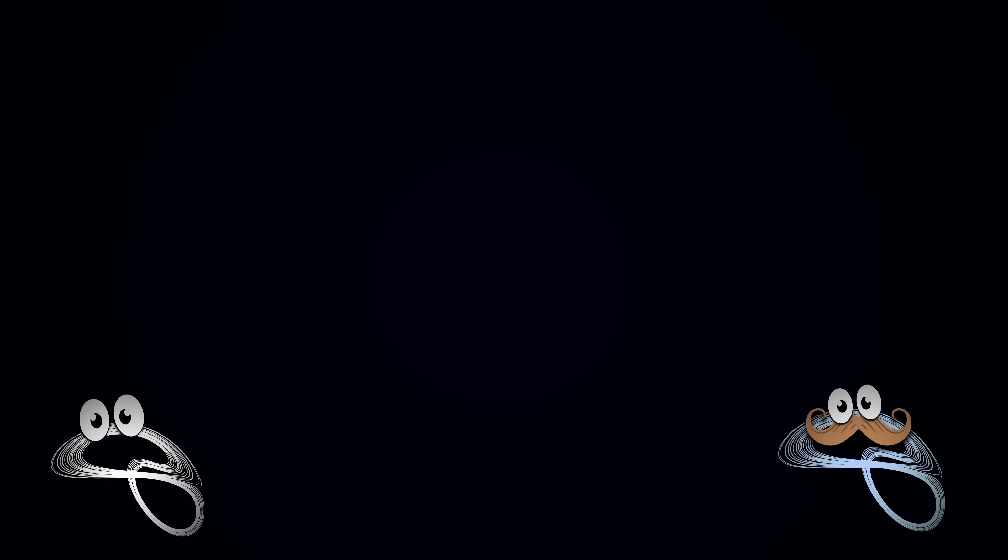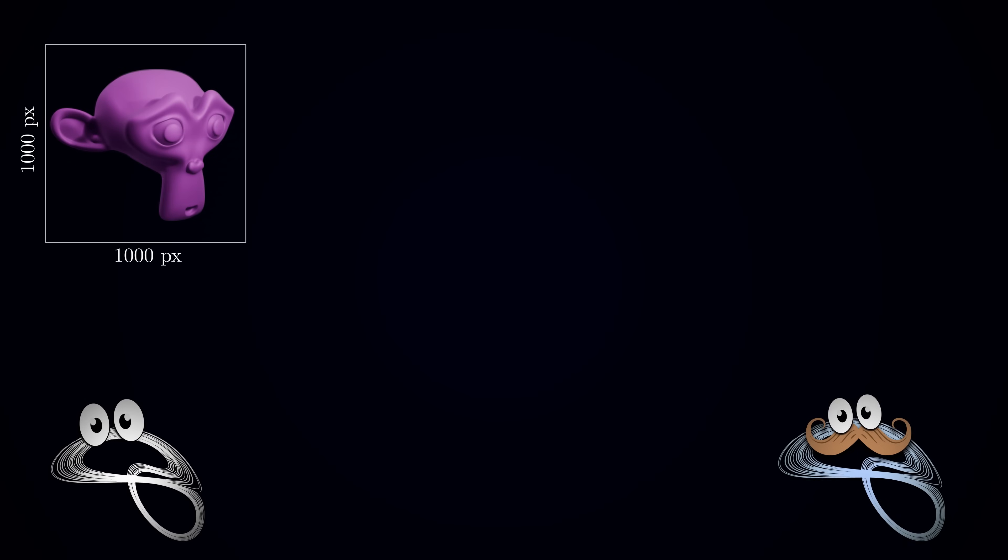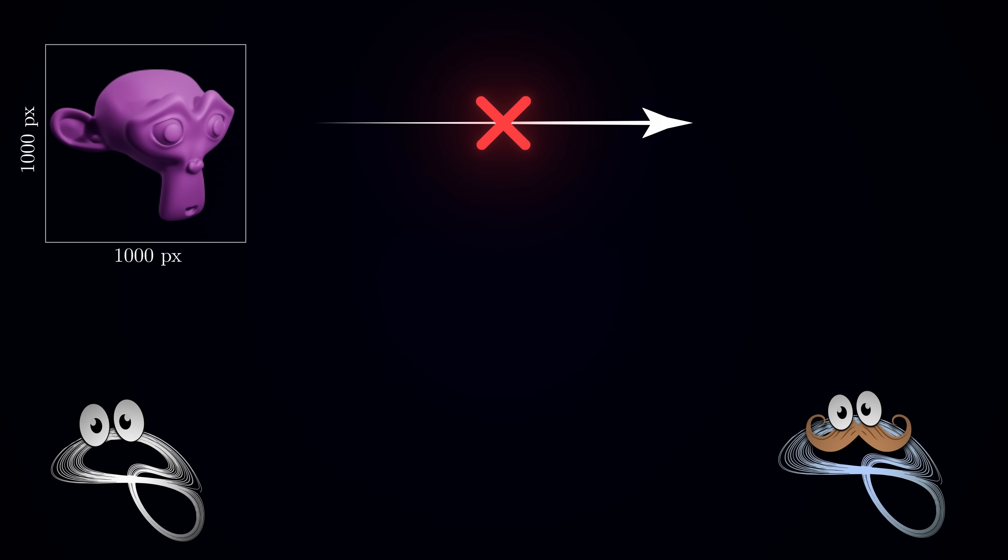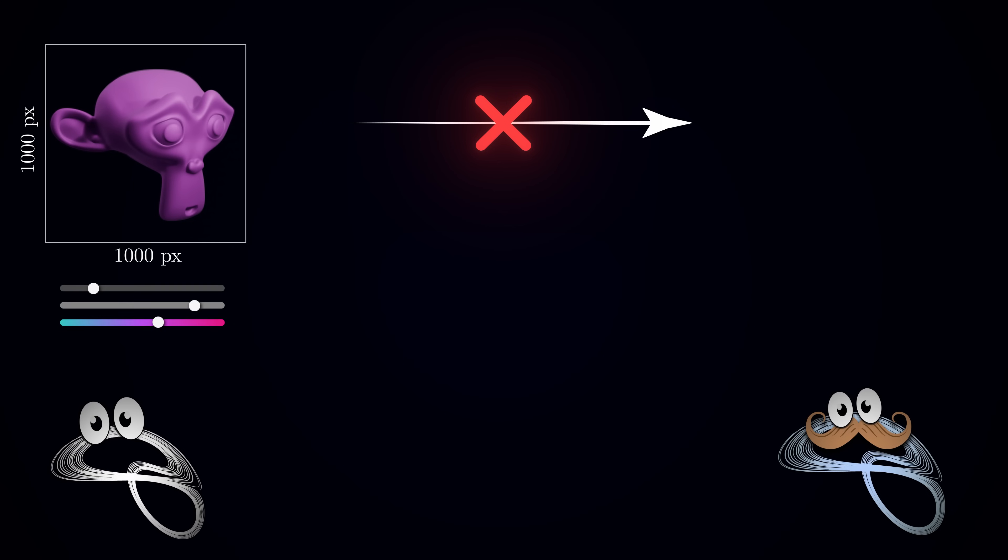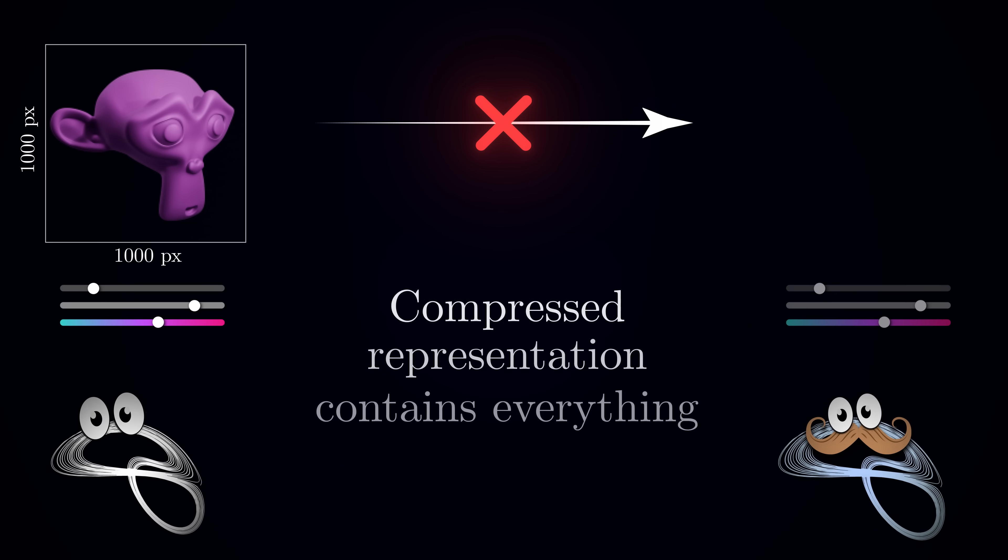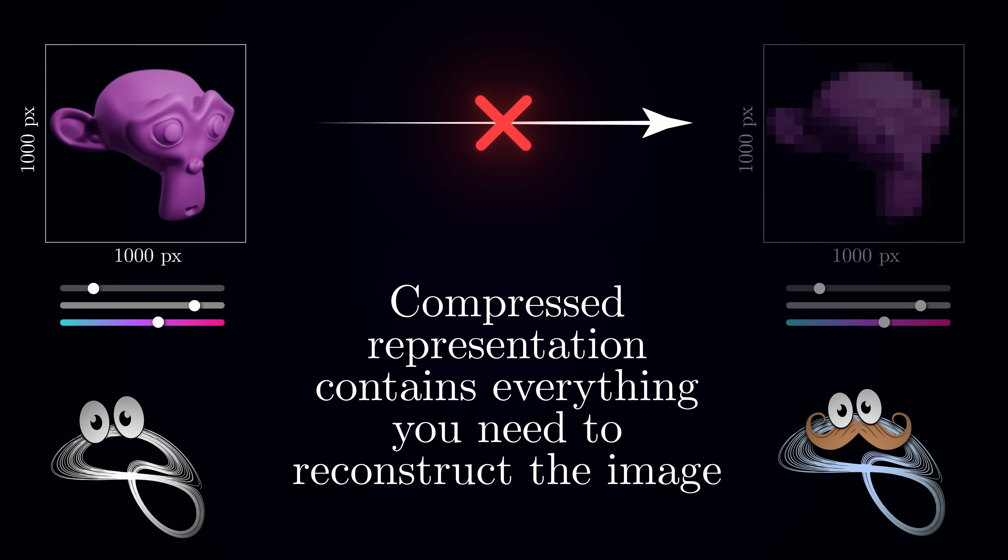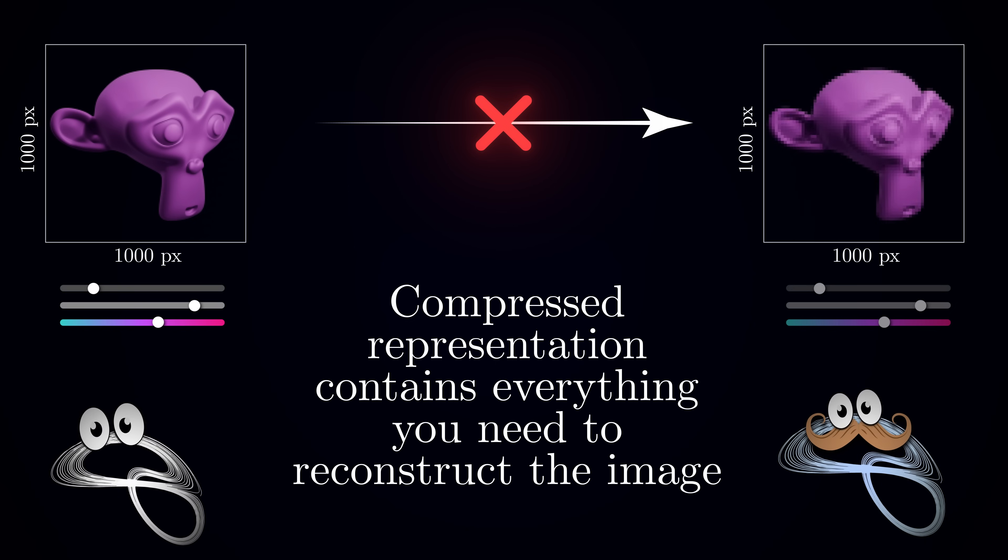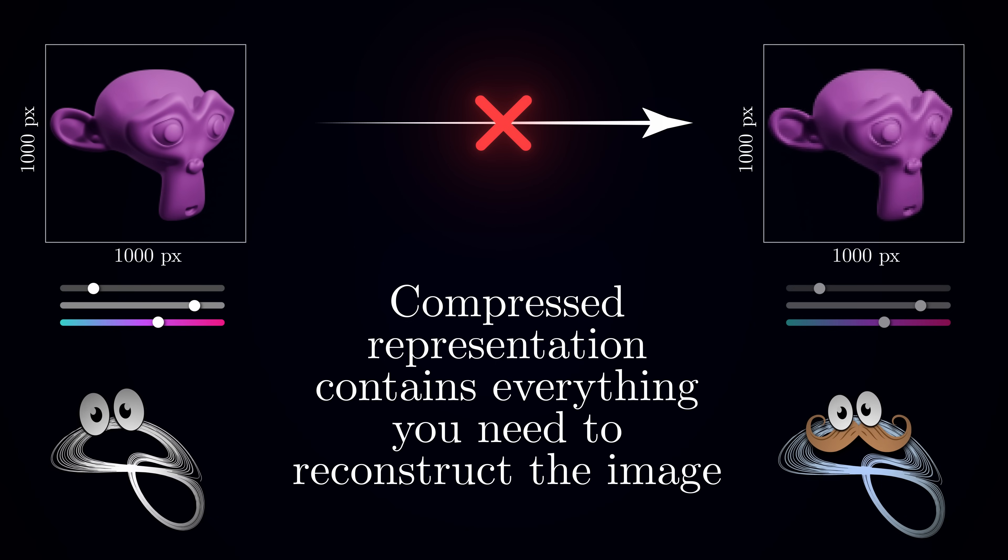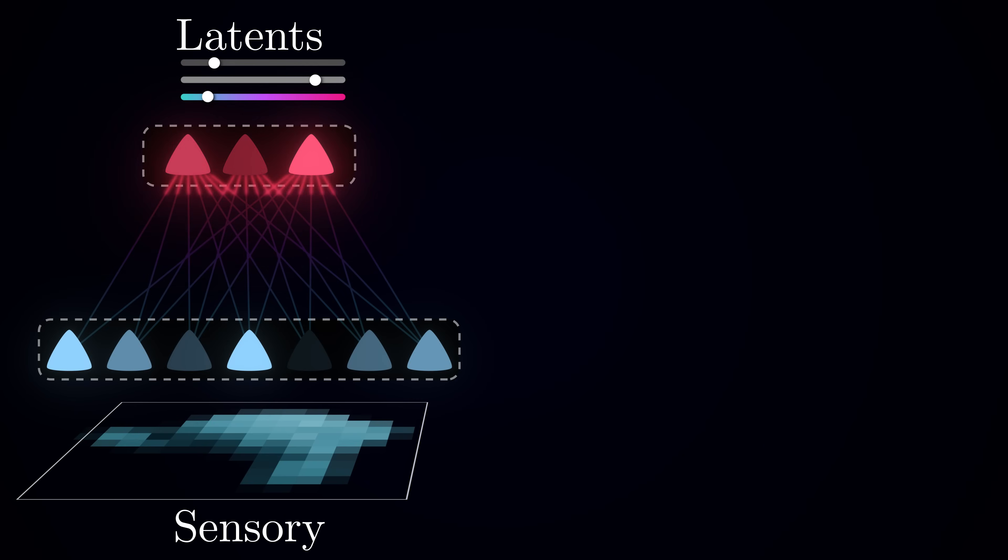For example, if you wanted to share one of those images with a friend, you wouldn't need to send them all the million pixels. You could just send three numbers, the positions of each slider, and if they have the same scene setup, they could generate the identical image. This is similar to how latent neurons encode abstract high-level features of the observed data.